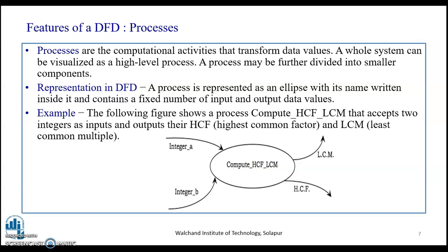Now let us understand the features of DFD and how each of these features are depicted graphically. We will also see an example for the same. Processes are the computational activities that transform data values. A whole system can be visualized as a high-level process, and a process may be further divided into smaller components. A process is represented as an ellipse with its name written inside it, and it contains a fixed number of input and output data values.